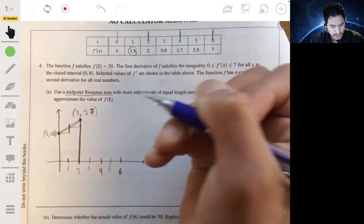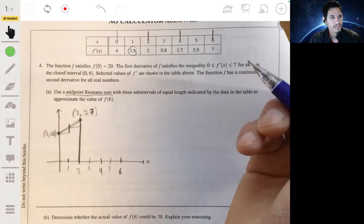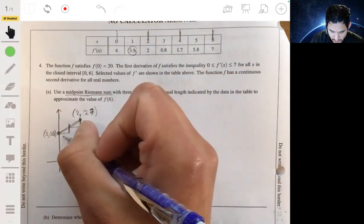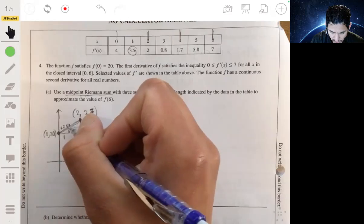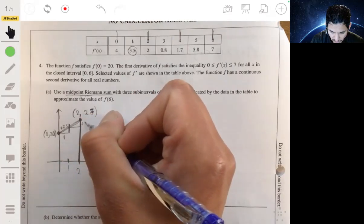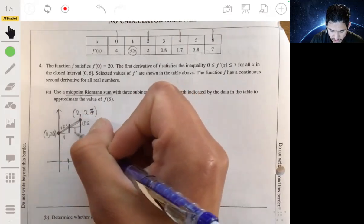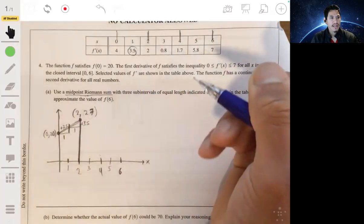So going up by 3.5 and then going up by 3.5 again leaves us at 27. Let me just put it here. So changing by 1, and then that's plus 3.5, and then plus 3.5 again.